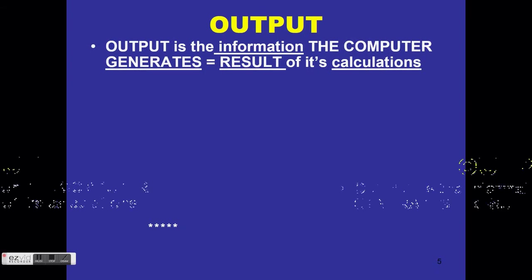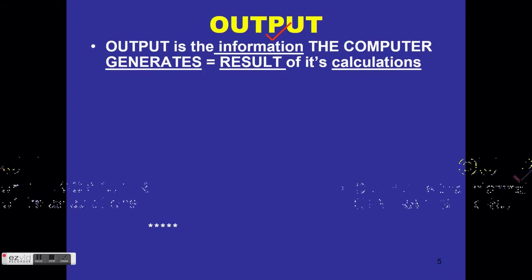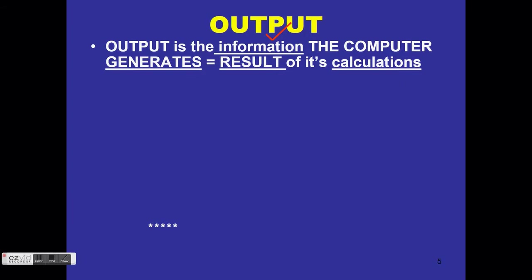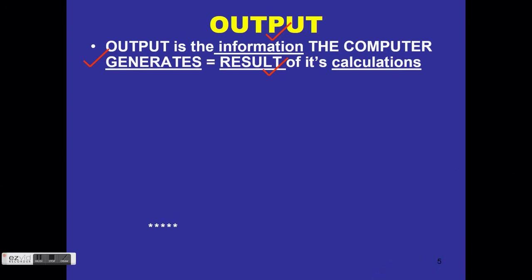Output is the information the computer generates as a result of its calculations. You enter data, and during the processing stage it is given structure, which is then output as information. Data plus structure gives you information.